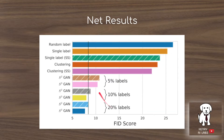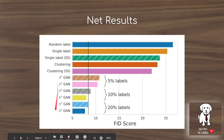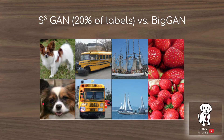This chart presents the overall results from the different techniques they test. The vertical bar indicates the state-of-the-art using labels. We're going to focus primarily on the S2GAN and related techniques, and discuss how S3GAN works.